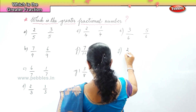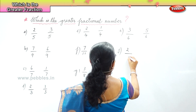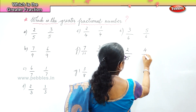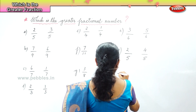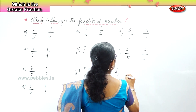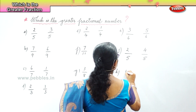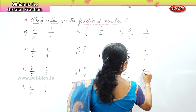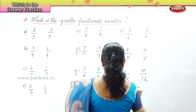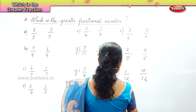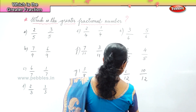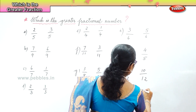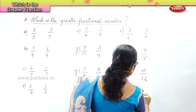Two by five and four by five. Six by twelve and ten by twelve. Three by twenty and fourteen by twenty.